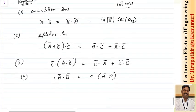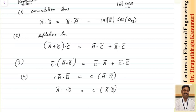Same way, if a is there and there is a scalar c multiplied by vector b, this also can be obtained by taking c out, computing the dot product of a and b, then multiplying by c. It is not going to affect.